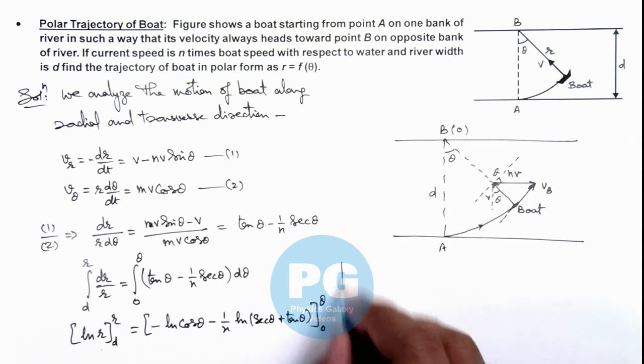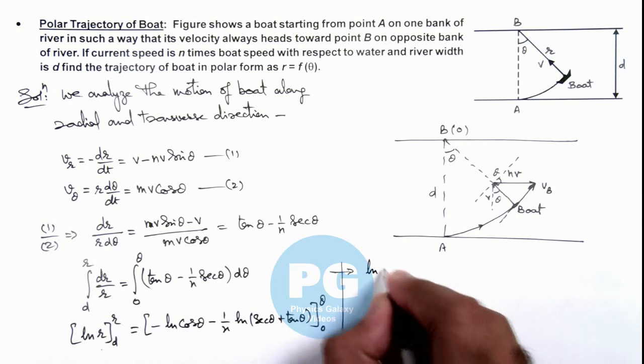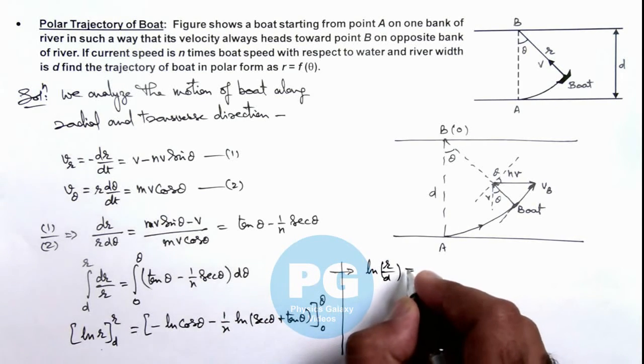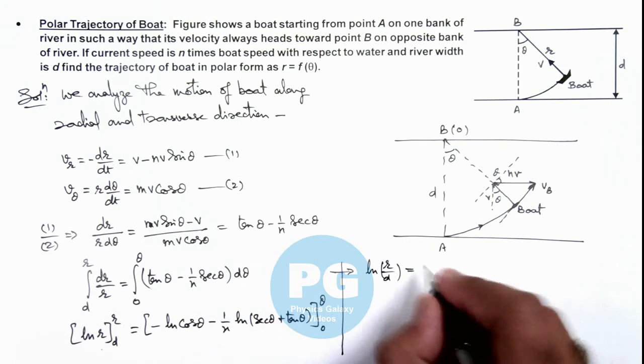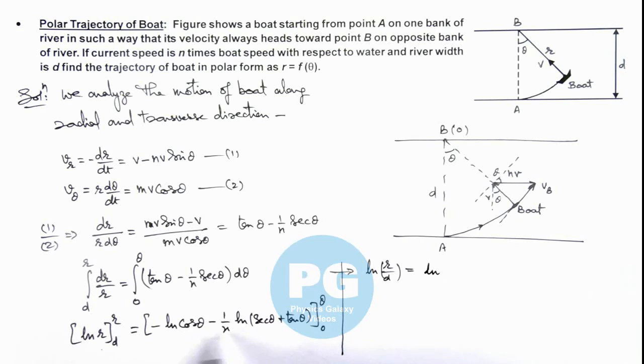And further if we continue from here, left hand side this will be ln r minus ln d, so this will give us ln of r by d is equal to, on the right hand side this will give us ln of, if we just take here, this can be written as ln of sec theta minus 1 by n ln of sec theta plus tan theta.